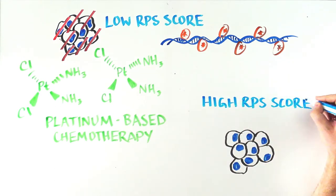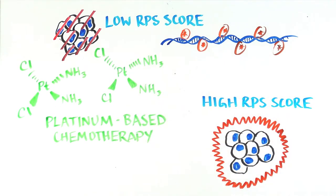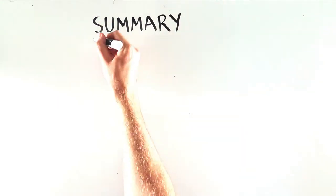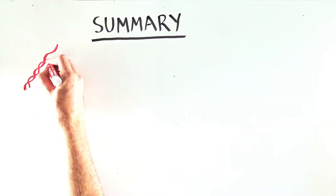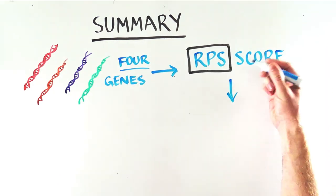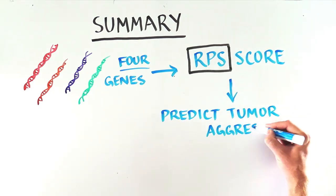However, these platinum-based chemotherapies don't actually kill cancer cells with high RPS scores. So what can we take away from this? The scientists have defined a set of four genes that alone define the RPS score.